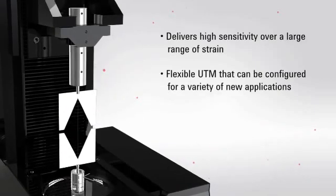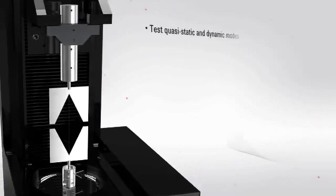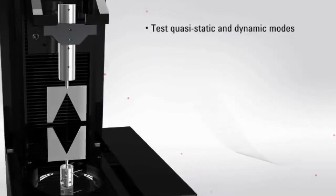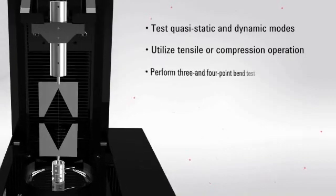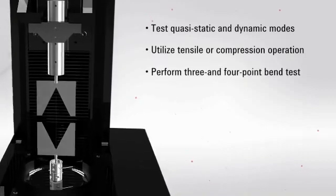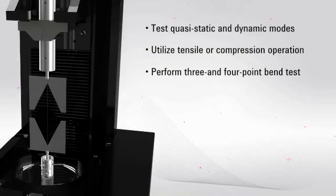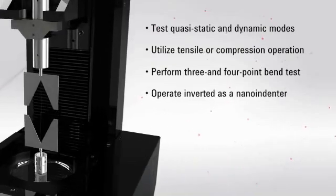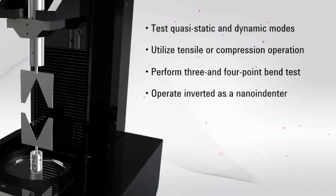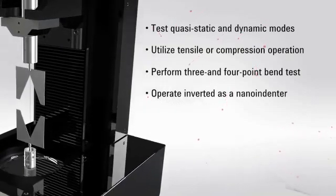The T150 UTM is also highly versatile. It can test in quasi-static and dynamic modes, utilize tensile or compression operation, and perform three- and four-point bend tests. Curious about the modulus and hardness of a material? The T150 can operate inverted as a nano-indenter as well. The impressive capabilities of this universal testing machine truly are unmatched in the market.